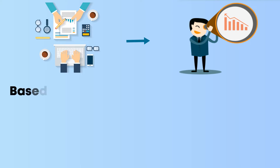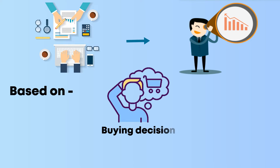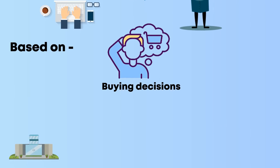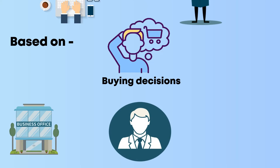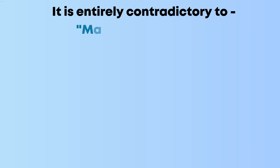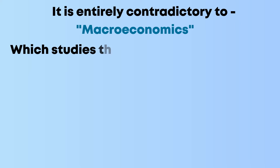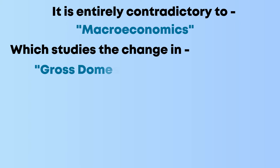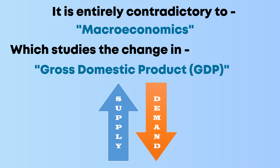This analysis predicts a future possibility based on the buying decisions of businesses, individuals, and governments. It is entirely contradictory to macroeconomics, which studies the change in the gross domestic product resulting from the shift in aggregate demand and supply of goods.